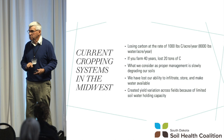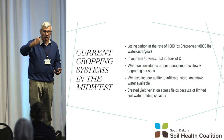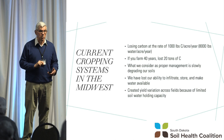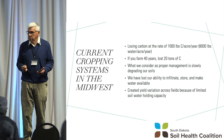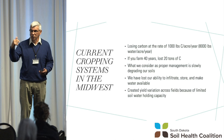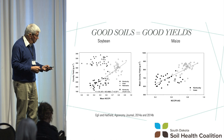In a typical corn-soybean system across the Corn Belt, we lose 1,000 pounds of carbon per acre per year. Multiply that by 40 years of farming and you have 20 tons of carbon loss. What we consider proper management is slowly degrading our soils. That 1,000 pounds of carbon is really about 8,000 pounds of available water. We've lost our ability to store water.